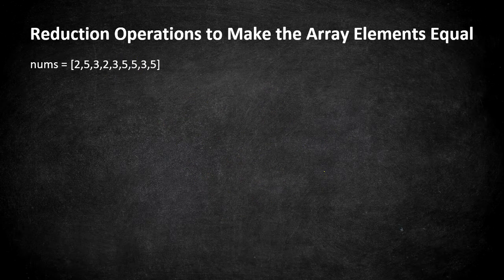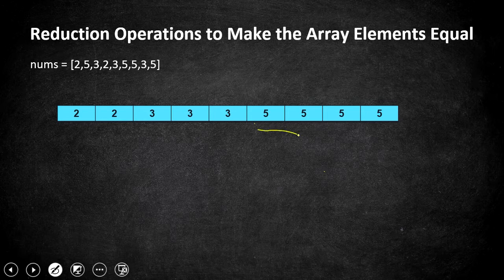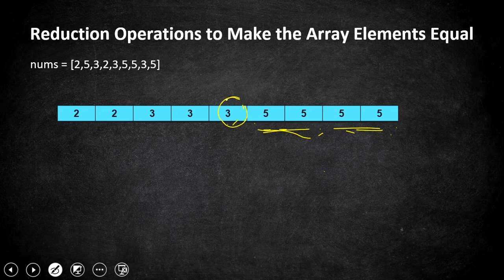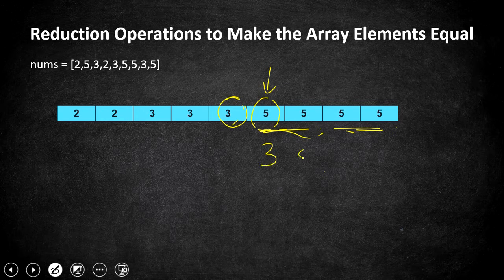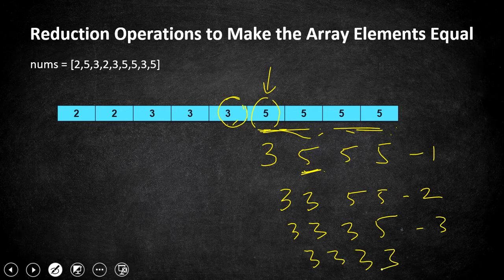Consider an example array with shuffled numbers. We are going to sort the array — either ascending or descending, whichever you prefer. Once sorted, there are four fives, which are the largest. Our task is to change all fives to three, since three is the next largest. Changing one five at a time from the smallest index: step one gives three fives remaining, step two gives [3,3,5,5], step three gives [3,3,3,5], and step four gives all threes.